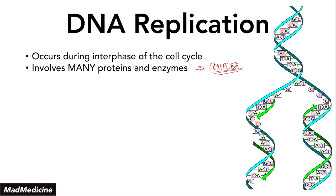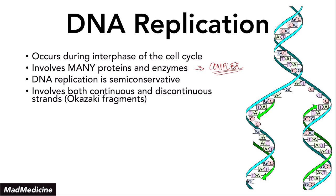We're basically taught the most basic bare-bone concepts of replication, but the actual process is very, very complicated. DNA replication is semi-conservative. It involves both the continuous and discontinuous — or non-continuous — strands called the Okazaki fragments. These are not continuous; there's a break right here. So these are the Okazaki fragments, and then you have a continuous fragment right there.